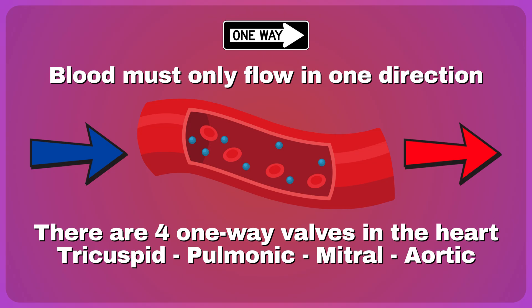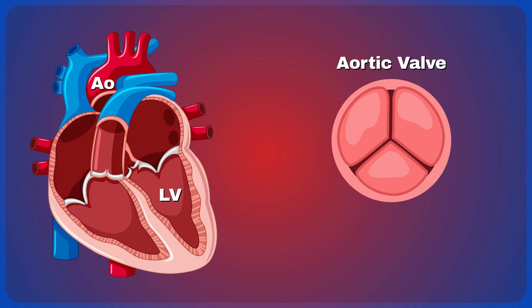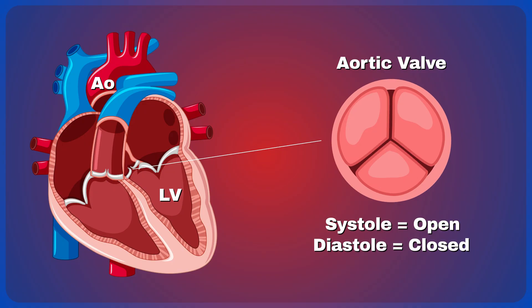Every single heart valve is equally important, but today I am only going to discuss the aortic valve since it is the one most commonly diseased and can cause the greatest amount of pathology. The aortic valve is normally a three-leaflet valve that sits between the left ventricle and the aorta. It opens during systole and closes during diastole, so a normally functioning valve does not interfere with forward flow and should prevent any backward flow.